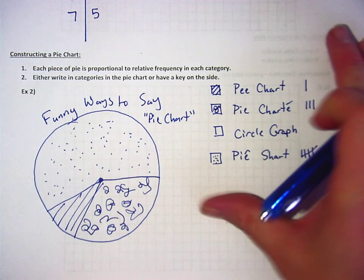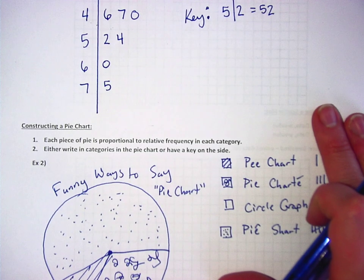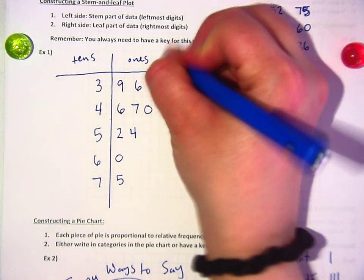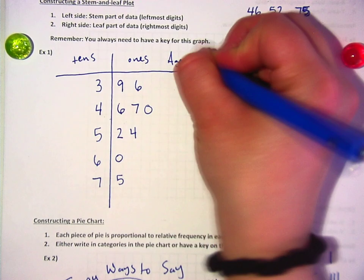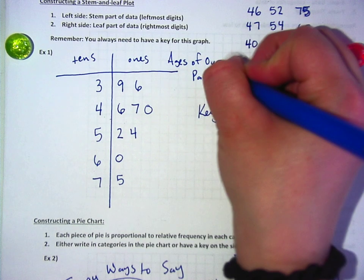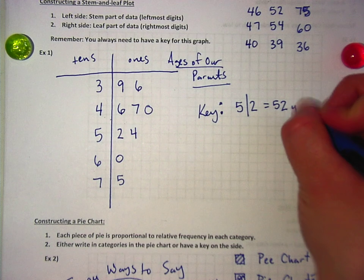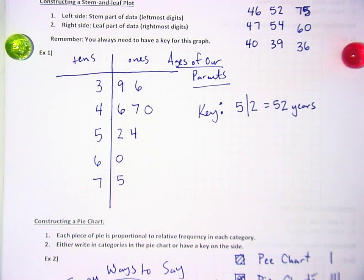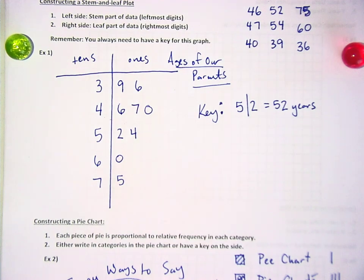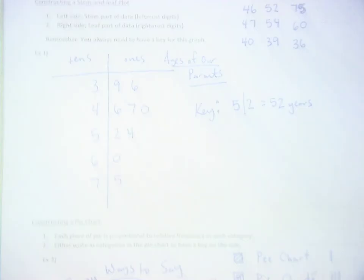If something does not get any votes, it still goes on the key, but obviously doesn't go in the circle, because there's no space for it. And then let's go back up to example one for the stem and leaf plot. And for that one, I want you to write a label on top that says ages of our parents. And then in the key, it should say 52 years. Or at least mine said 52 years. Yours might be a different number. Okay.